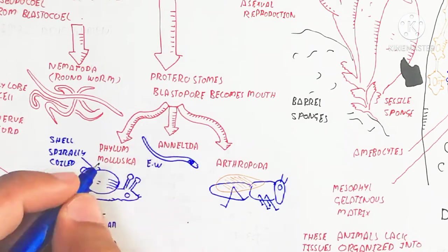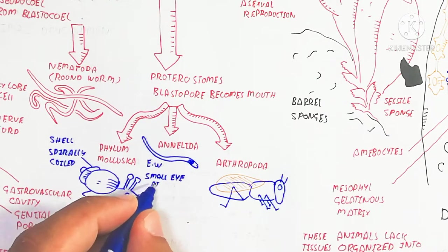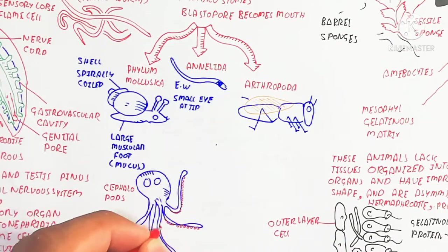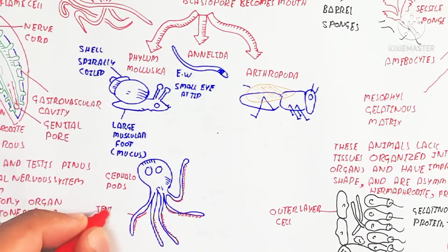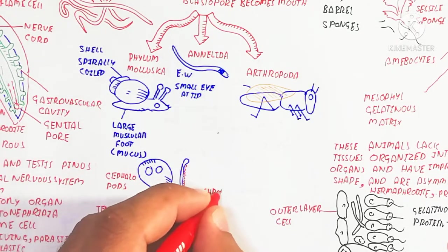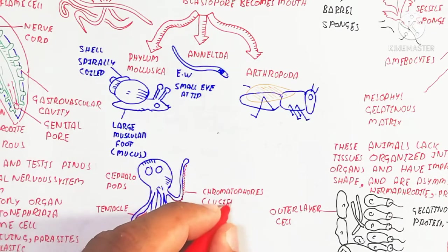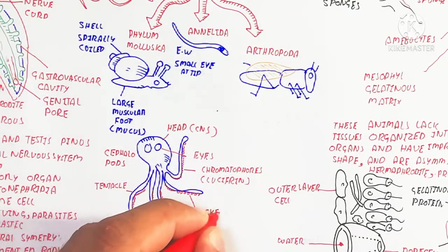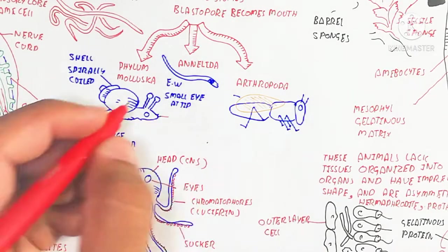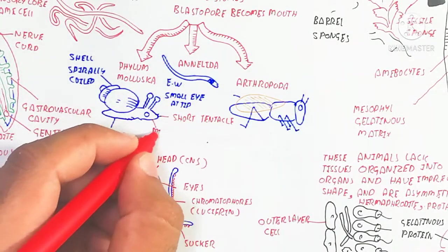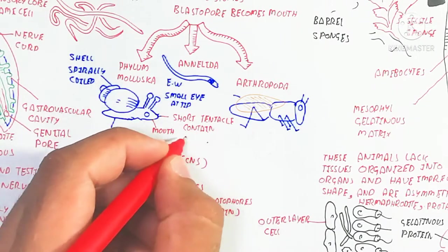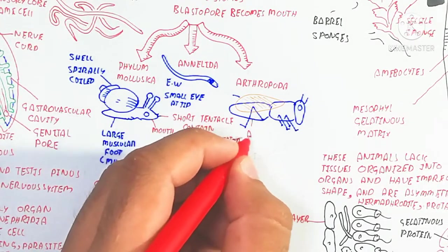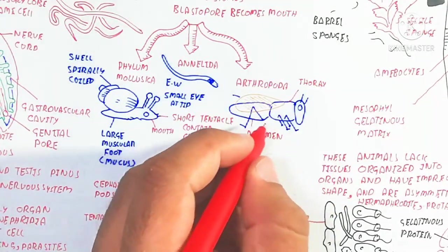Annelida contains a cuticle, and the earthworm has a mucous layer on its upper side with oxygen diffusing directly from the circulatory system. Phylum Mollusca also contains Cephalopoda, which includes octopus. Cephalopoda contains chromatophores in the upper skin as well as luciferin protein and melanocytes. The snail and slug contain short tentacles with chemoreceptors and small eyes at the tip of rod-like structures.